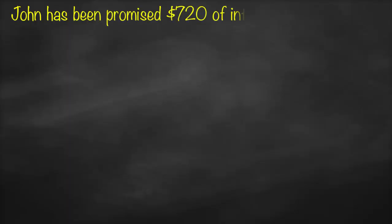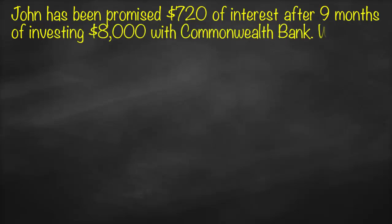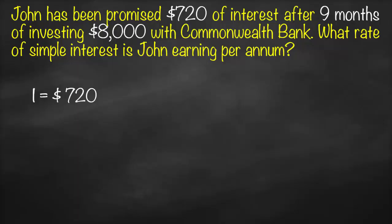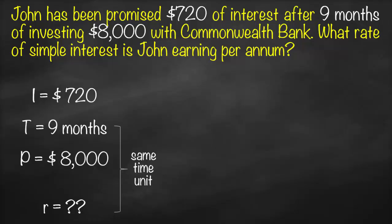John has been promised $720 of interest after nine months of investing $8,000 with Commonwealth Bank. What rate of simple interest is John earning per annum? The variables are: interest amount = $720, time = 9 months, principal = $8,000, and we need to calculate the simple interest rate. Since the interest rate is typically expressed as an annual rate but time is in months, we have a unit mismatch.